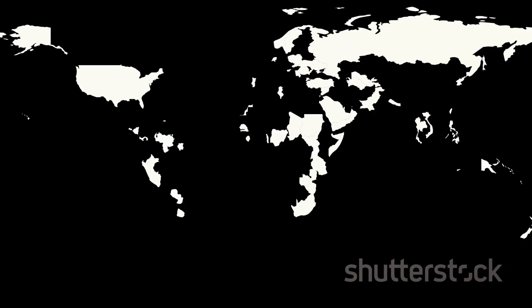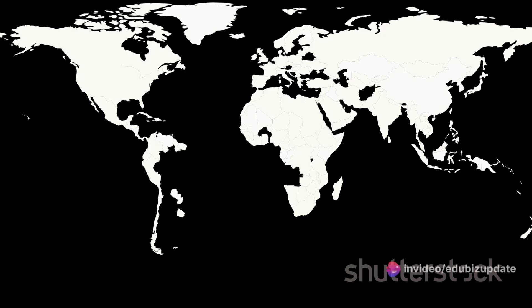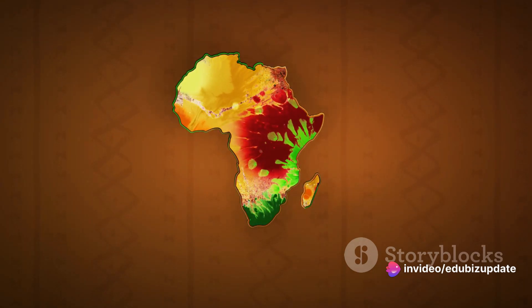The most common map projection in use today is the Mercator projection, created by Gerardus Mercator in the 16th century. This cylindrical map projection preserves accurate direction, making it incredibly useful for navigation and marine charts.